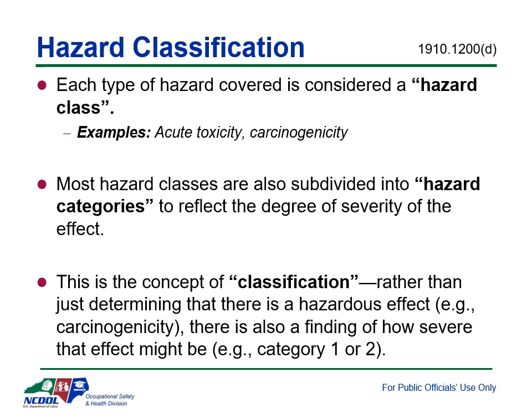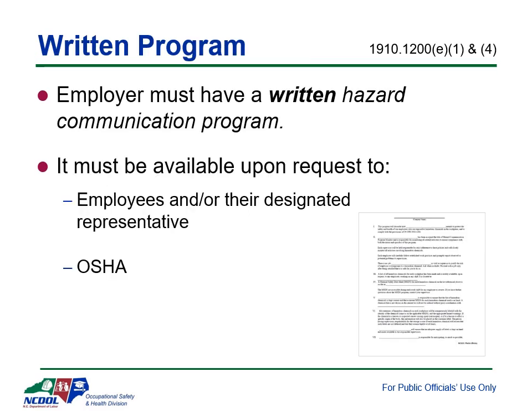The general concept of classification is to determine the hazardous effect — such as a carcinogen — and the severity of the effect, such as Category 1 or Category 2. A written hazard communication program is a requirement of the standard, and a copy must be made available upon request to employees and their representatives, such as a spouse or a lawyer, as well as OSHA representatives such as compliance officers. Failure to do so is a violation and will typically result in citations and penalties.